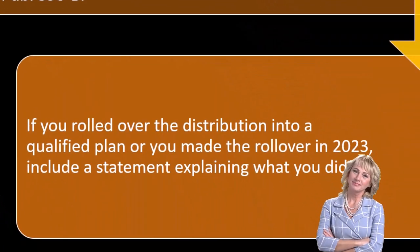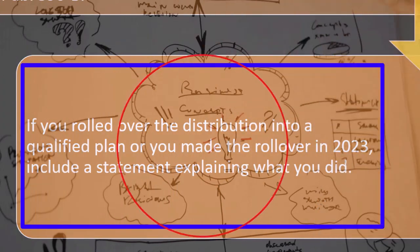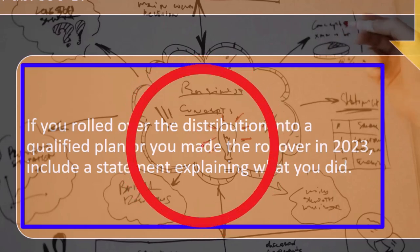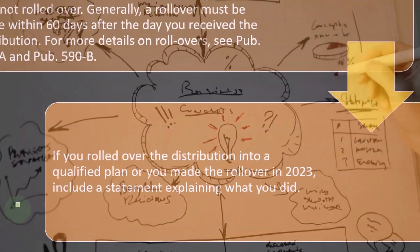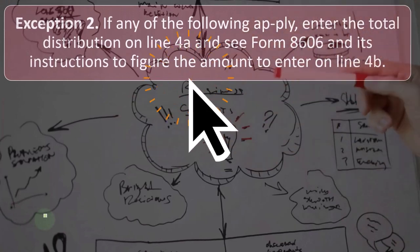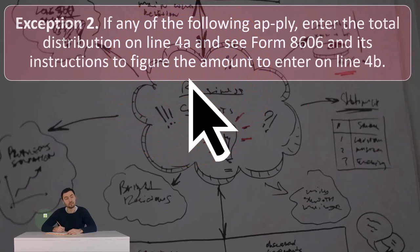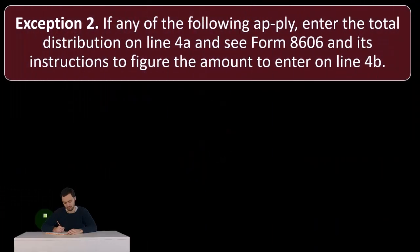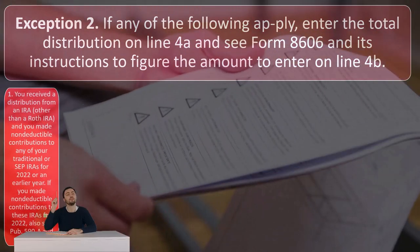If you rolled over the distribution into a qualified plan and you made the rollover in 2023, include a statement explaining what you did. Exception two: if any of the following apply, enter the total distributions on line 4A and see Form 8606 and its instructions to figure the amount to enter on line 4B.